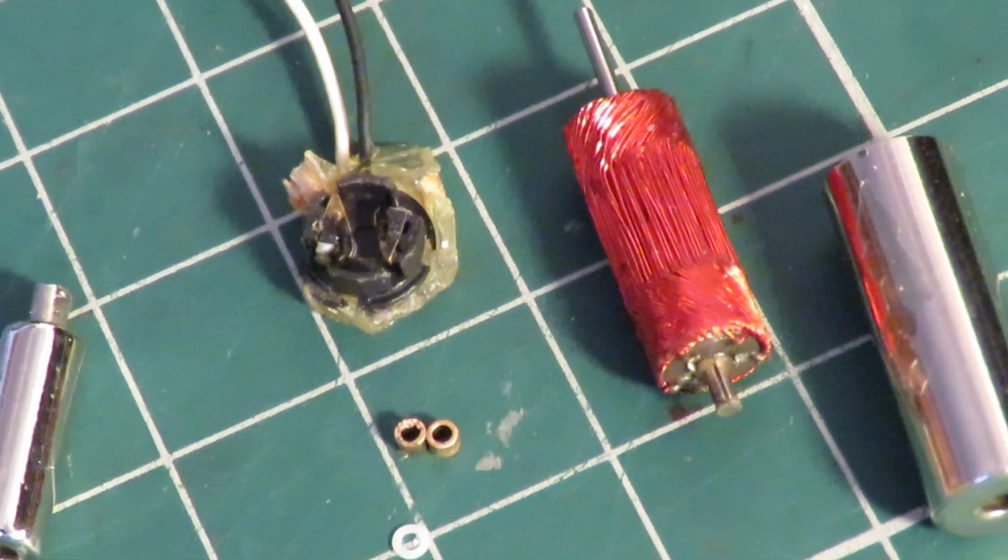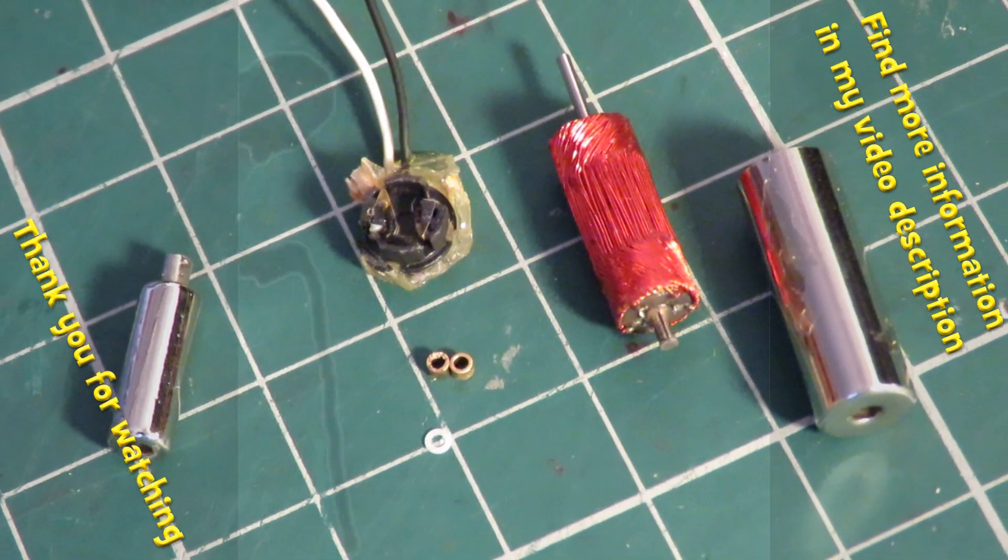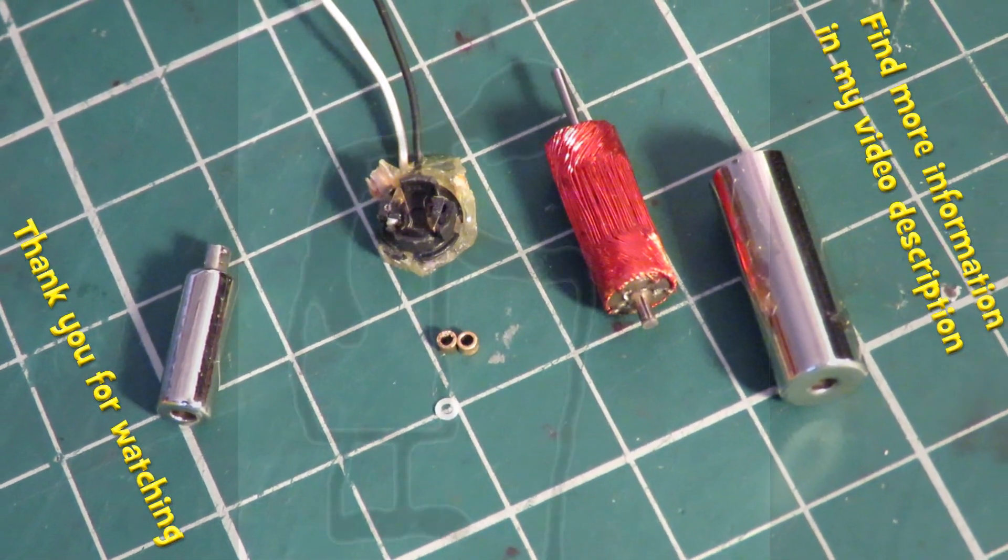So that's the inside of a 3.7 volt coreless motor, DC motor.